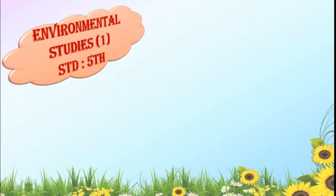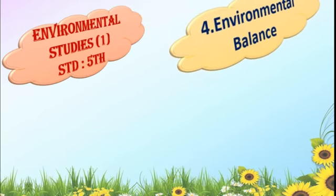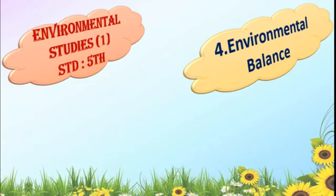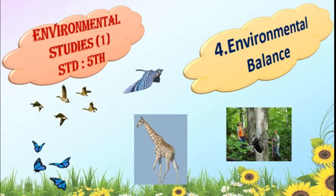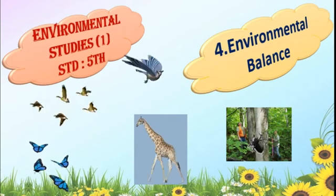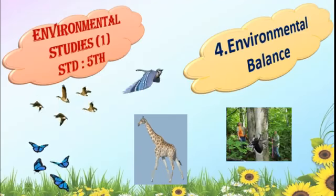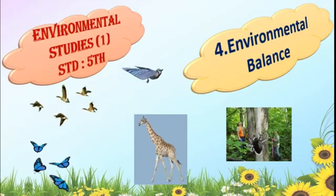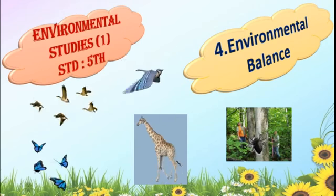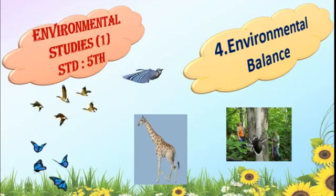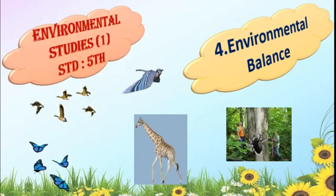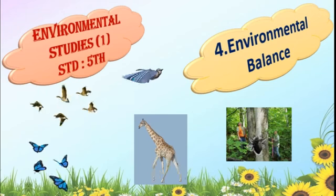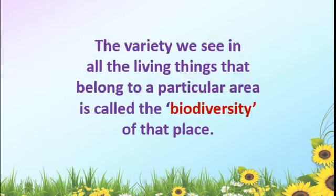The subject is Environmental Studies Part 1 of Standard 5 and the name of the lesson is Environmental Balance. There are innumerable types of living things on the earth and we can see different living things in different places. Where the animal or the bird fulfills its basic needs like food, water and shelter, in that place it lives. In the last lecture, we studied about biodiversity. The variety we see in all the living things that belong to a particular area is called the biodiversity of that place.